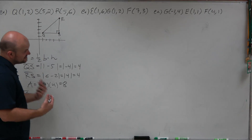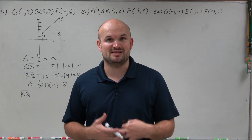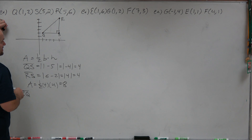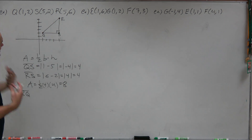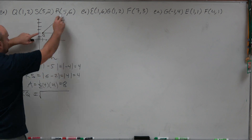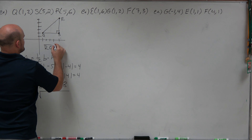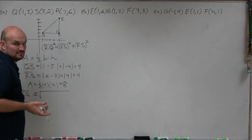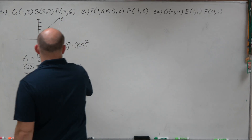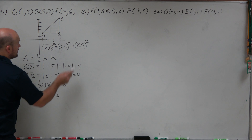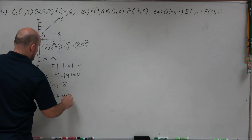Now the one thing we haven't figured out is RQ. Hopefully you can see this is a right triangle, so to find that distance we can just use the Pythagorean theorem, which is basically the same as the distance formula. RQ squared equals QS squared plus RS squared — that's the Pythagorean theorem: A squared plus B squared equals C squared. Taking the square root of both sides, RQ equals the square root of 4 squared plus 4 squared, which is 16 plus 16 equals 32.